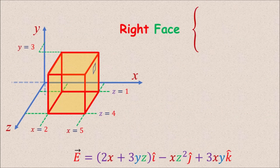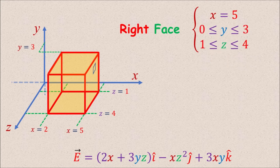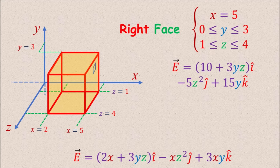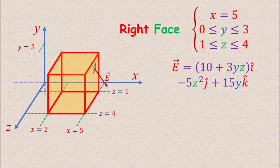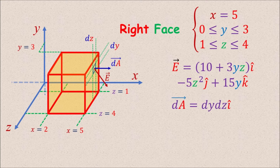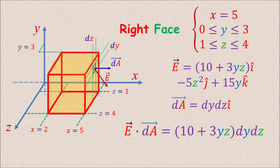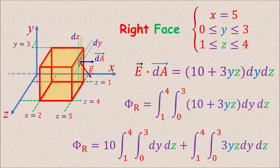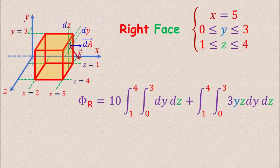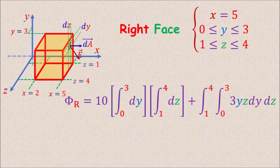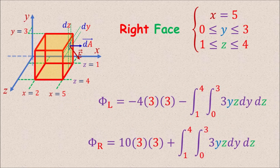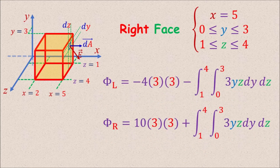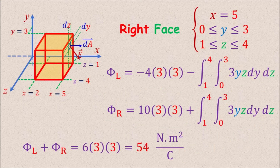The right face is defined by x equal to 5, y between 0 and 3, and z between 1 and 4. The E field expression for x equal to 5 is used, and the dA vector is dy dz i-hat. So E dot dA becomes (10 + 3yz) dy dz. The flux through the right face splits into two parts: the first gives 10 times 3 times 3, the area of the face. Comparing the left and right face fluxes, the second terms (involving 3yz) cancel. The sum of these two fluxes is 6 times 9, which equals 54 Newton meters squared per Coulomb.